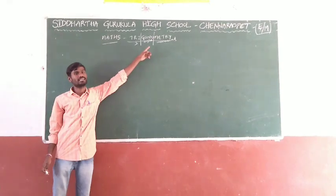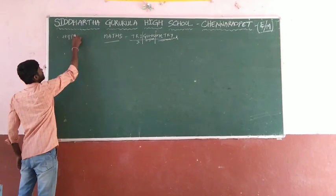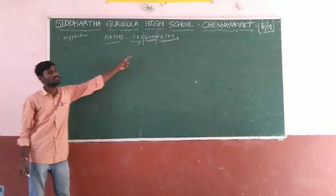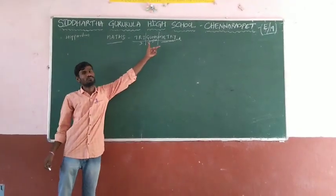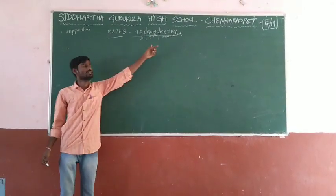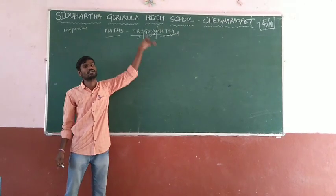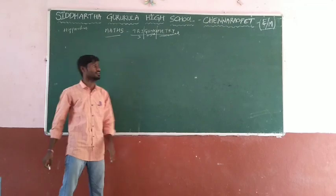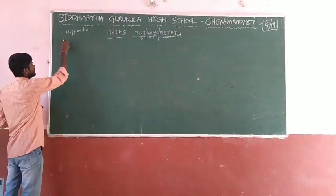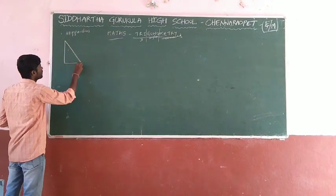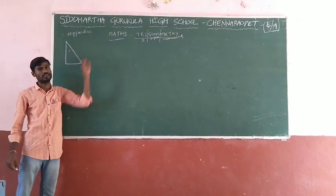The mathematician who introduced this concept is Hipparchus, and he is named as the father of the branch of trigonometry. Trigonometry is a branch of mathematics which deals with the angles of a triangle in correspondence with the ratio of sides. This chapter is applicable for a right angle triangle.